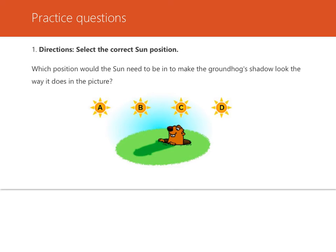A shadow is created when an object blocks the light from reaching a surface. The location of a shadow depends upon the location of a light source. The shadow of the groundhog appears diagonal to the left of the groundhog, so the sunlight must be coming diagonally into the right of the groundhog. The groundhog is blocking the sunlight going through it diagonally, so the shadow is created in the shape of the groundhog this way. The position of the sun would be D.